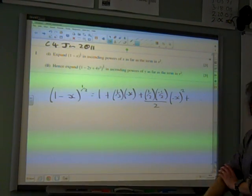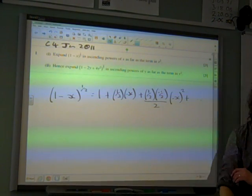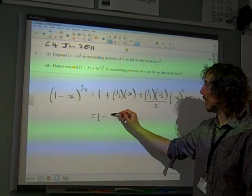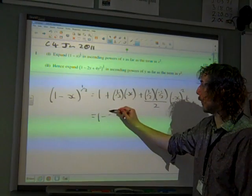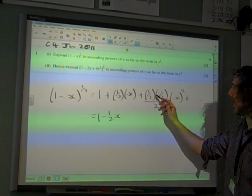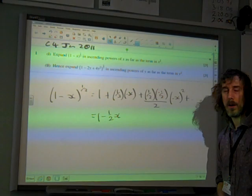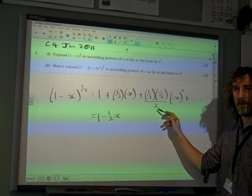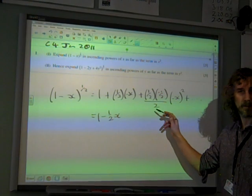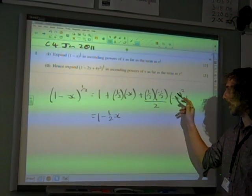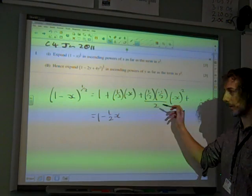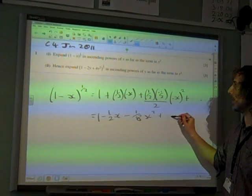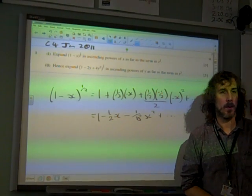Divided by 2 times the x bit squared. And then it would go on, but that's all we were actually asked for. Now we just need to make sure that we're not doing anything silly with fractions. 1 minus 1 half, so that will do a half x. Now, what have we got here? We've got 1 half times negative 1 half divided by 2. I think that's 1 eighth, isn't it? And it's negative. And that minus x is squared, so that becomes positive. So it's going to be minus 1 eighth of x squared.